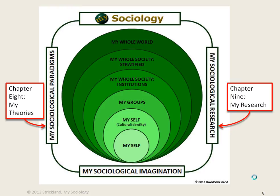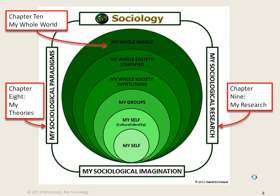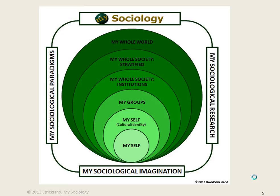Finally, the course ends by broadening the focus to a global perspective with chapter 10, My Whole World. So the model for this My Sociology textbook is one that is underpinned with the sociological imagination and flanked with both theory and research throughout. It begins with a micro level focus on the self, then progresses to a meso level focus, a macro level focus, and finally a global perspective of society and the world.